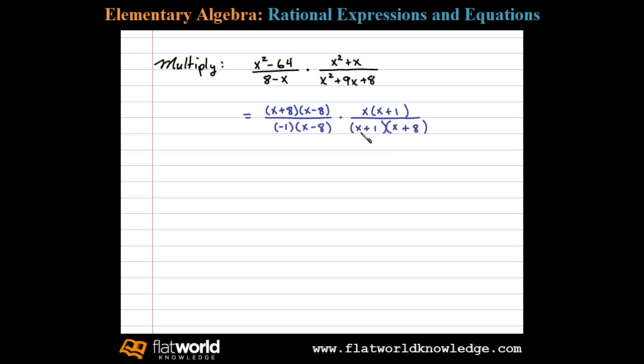Once we have it factored we can then cancel. Here we notice we have a factor of x plus 1, those cancel in the numerator and denominator. We have factor x minus 8. Now over here we have a factor of x plus 8 in the numerator and an x plus 8 in the denominator. These cancel as well.